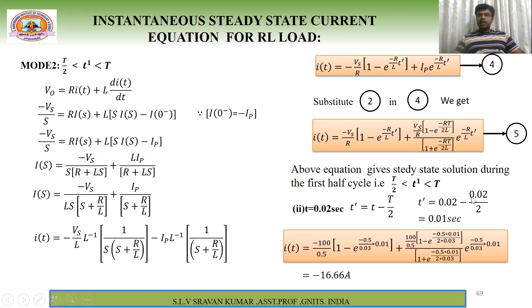At t = 0.02 s: t′ = 0.02 − T/2 = 0.02 − 0.01 = 0.01 s. Substituting t′ = 0.01 s into the Mode 2 expression gives i = −16.66 A.